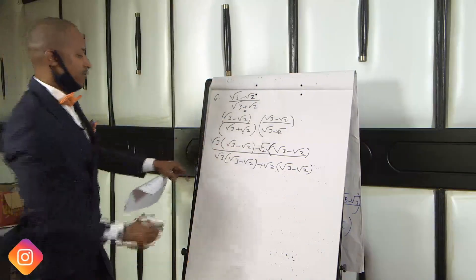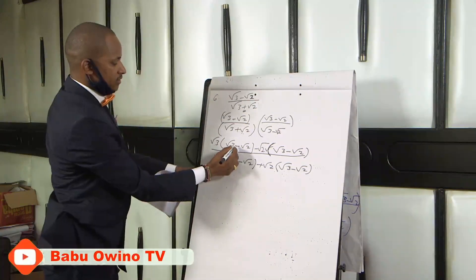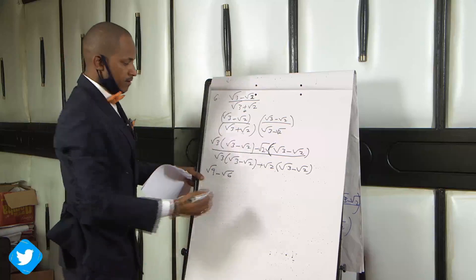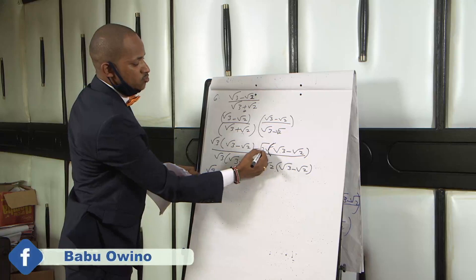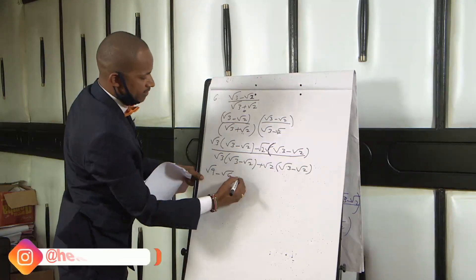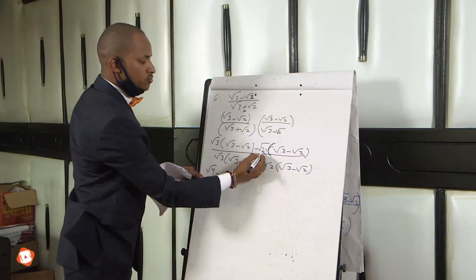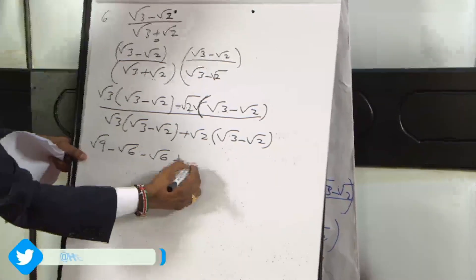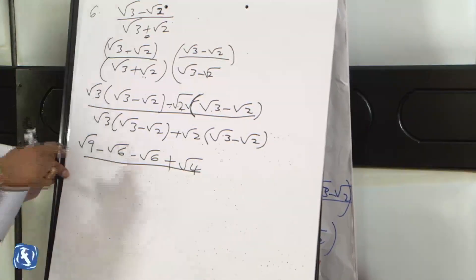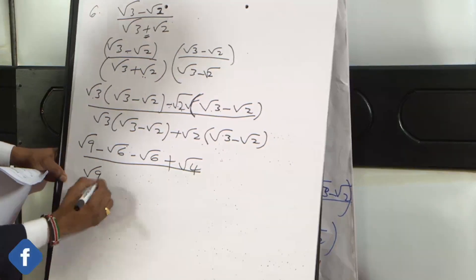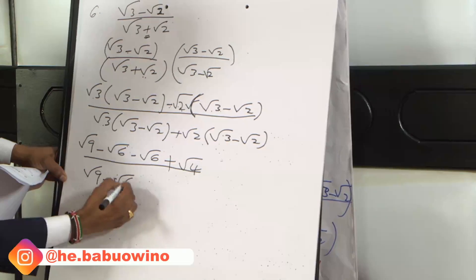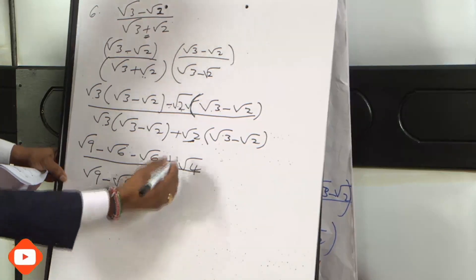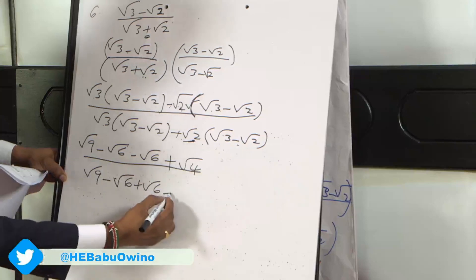Root 3 times root 3 is 3, and root 3 times minus root 2 is minus root 6. Just multiply what's inside the roots. Then root 2 times root 3 gives minus root 6. Then minus root 2 times minus root 2: minus times minus is plus, giving root 4. Then the denominator: root 3 times root 3 is root 9, root 3 times minus root 2 is minus root 6, root 2 times root 3 is plus root 6, and plus root 2 times minus root 2 is minus root 4.